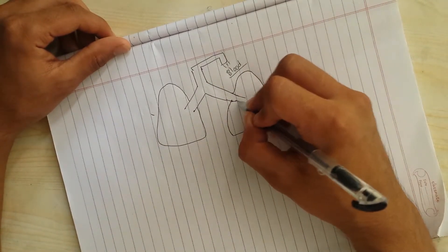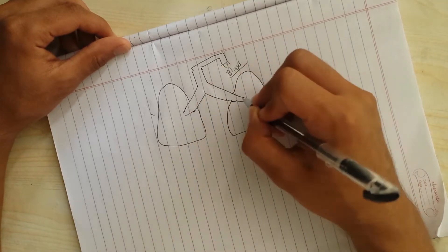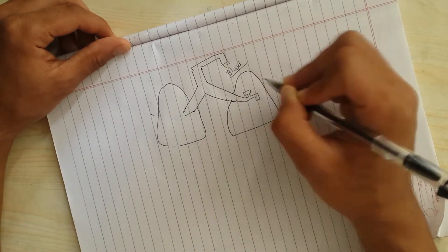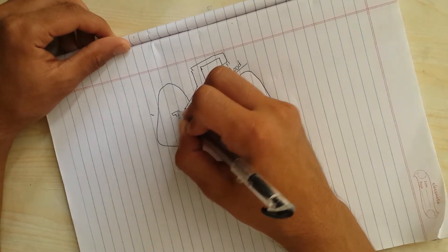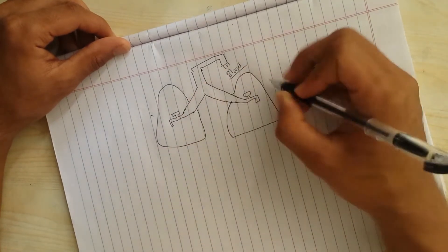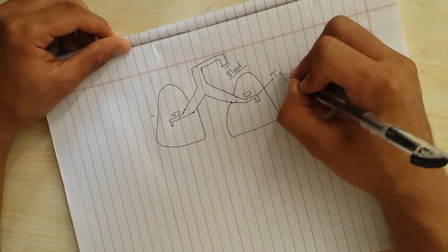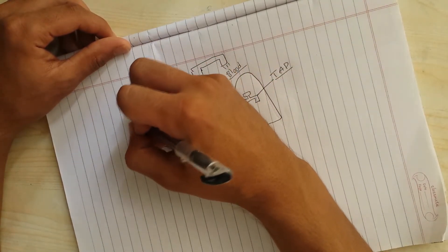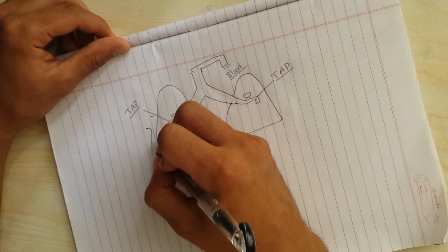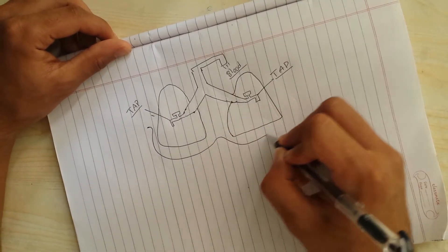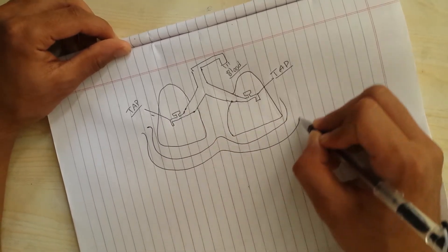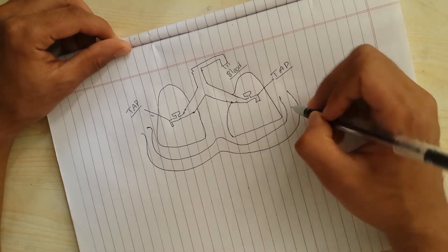And these factories have two taps, alright? So here I'm drawing taps and there are two of them. And this factory is surrounded by a road which is just similar to any blood vessel. So this is road.